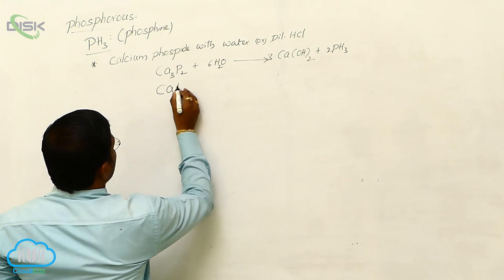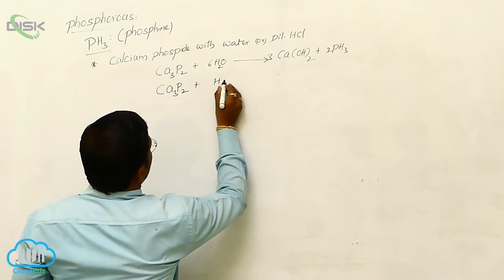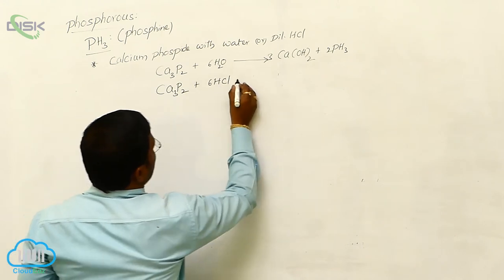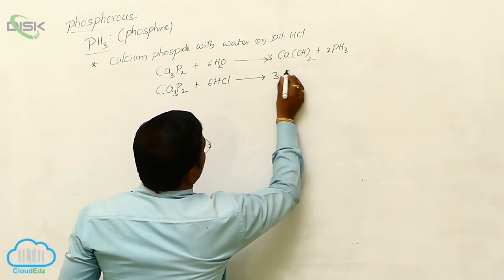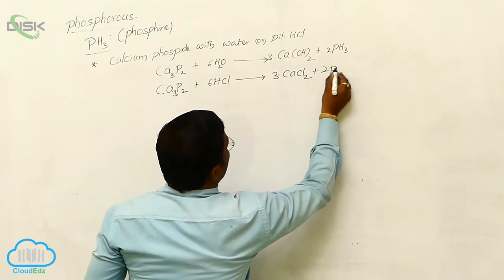Similarly, calcium phosphide when reacted with HCl, 6 moles of HCl produces calcium chloride and phosphine as our compound.